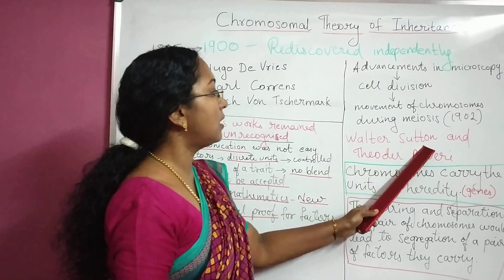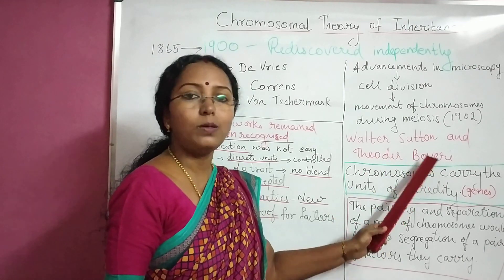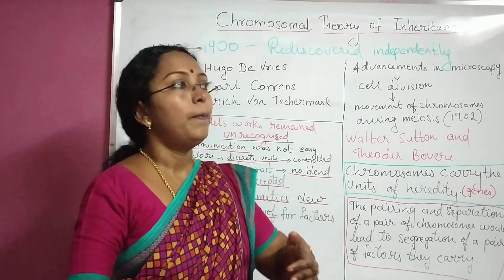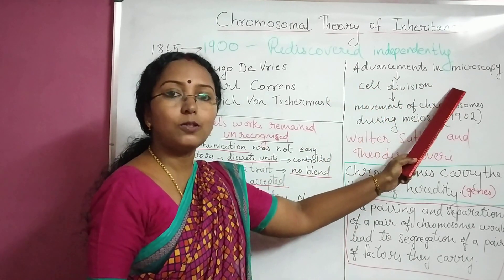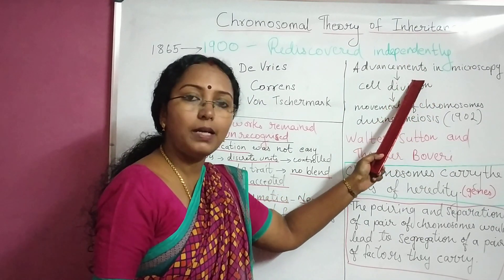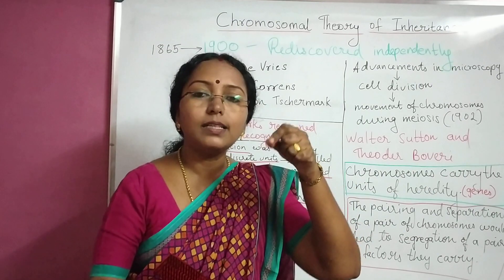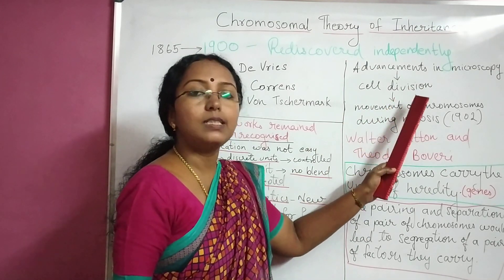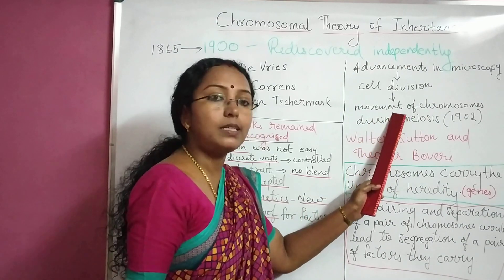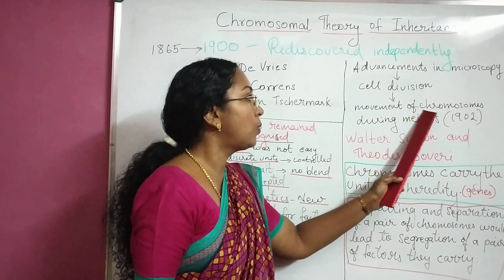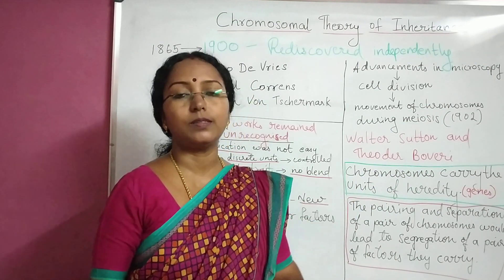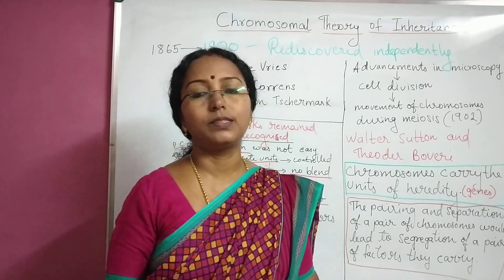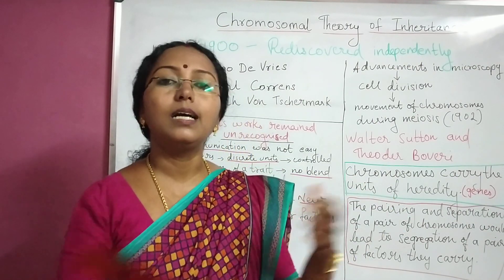Two scientists, Walter Sutton and Theodor Boveri, could crack it out. By that time there were advancements in microscopy, and because of these advancements, minute details inside cells could be observed. One such observation was cell division. When cell division was observed, scientists studied the movement of chromosomes. Here comes the word chromosomes.